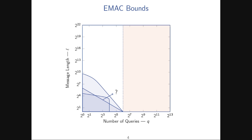There is an entire birthday-bound red zone, with a Preneel-Van-Oorschot attack showing you cannot go anywhere in that region. Papers computing these bounds also show an attack on message length, so you can't go up indefinitely. This limits EMAC to the first quadrant. If you plug in a random function instead of a random permutation into EMAC, that entire zone gets filled in red as well. So if you're dead set on using a 32-bit block cipher, the only thing left to do is switch schemes.